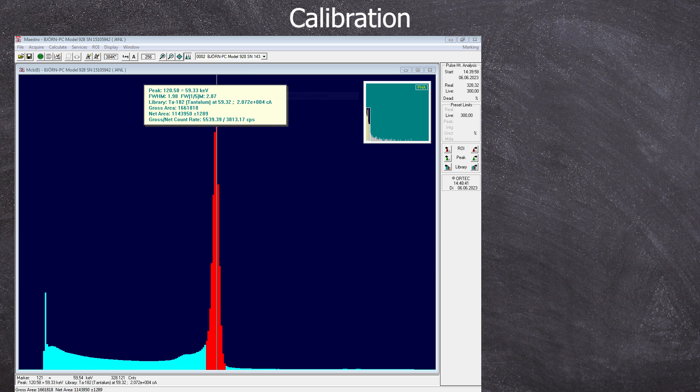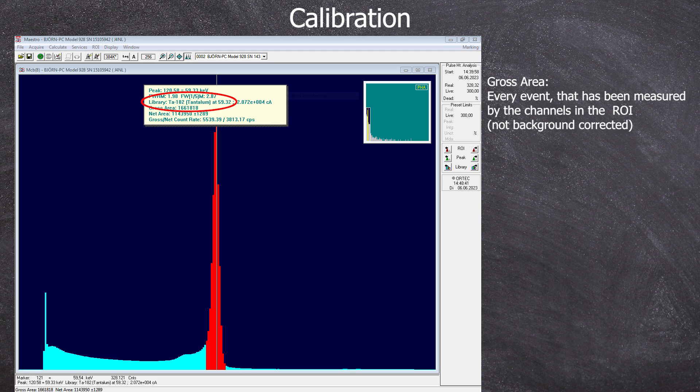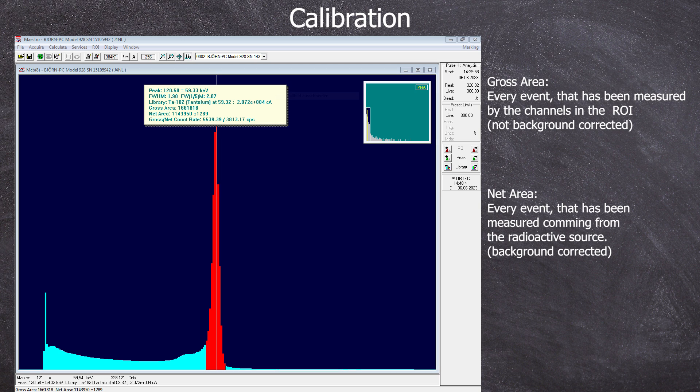For the efficiency calibration, you will need to mark the peak in the region of interest and click on it. The database identifies our Americium as tantalum-182, which we can ignore. What interests us is the gross and the net area. The gross area describes the absolute number of counts measured in the channels in the ROI, while the net area represents the background corrected counts that came from the channel in the ROI.